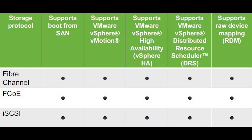The three protocols are Fiber Channel, Fiber Channel over Ethernet, and Internet Small Computer Systems Interface. Internet Small Computer Systems Interface is an IP-based standard protocol for linking data storage devices over a network and transferring data by carrying small computer system interface commands over IP networks. It enables clients to use the same networking technology for storage, storage management, and data networks. And because it uses TCP/IP, it is suited to run over almost any physical network.